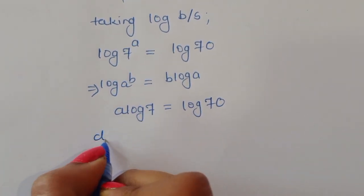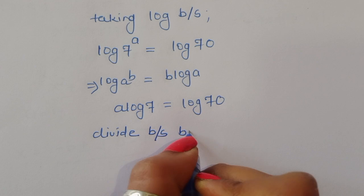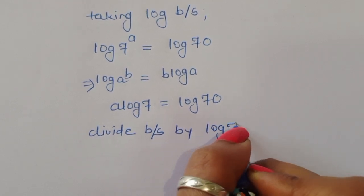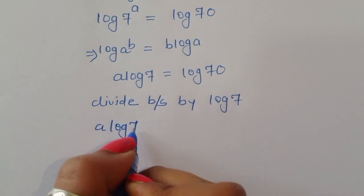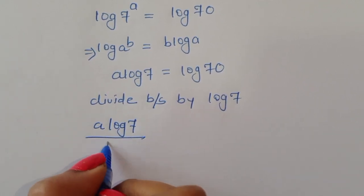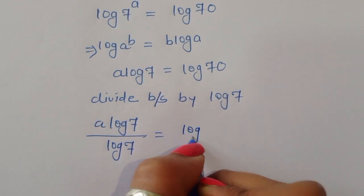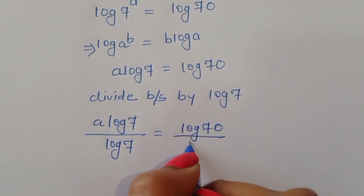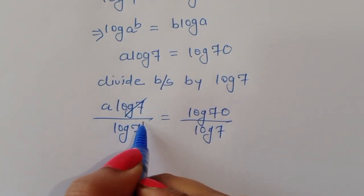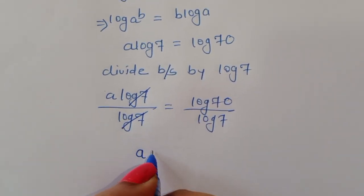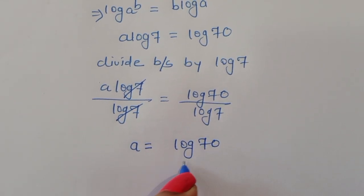Now we divide both sides by log 7. So a times log of 7 divided by log of 7 is equal to log of 70 divided by log of 7. Log 7 cancels on the left, so a is equal to log of 70 divided by log of 7.